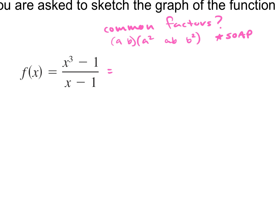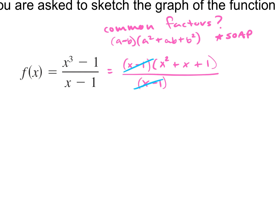SOAP: same sign, opposite, always positive. So the signs are minus, plus, plus. When we factor x cubed minus 1, it factors into (x minus 1)(x squared plus x plus 1). So do we have any common factors? Yes, x minus 1. So we have a hole at x equals 1.